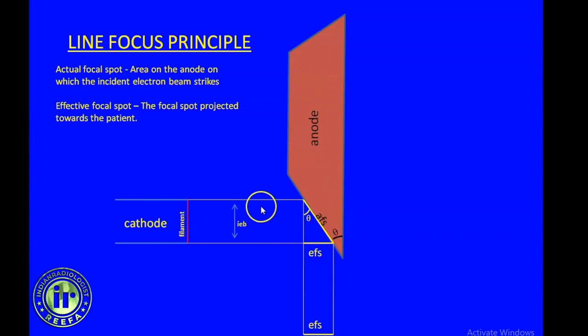The width of the beam should be longer so the surface area increases and there will be more heat dissipation. But if we have a wider beam, the image will be blurred. So we need a sharper image and higher heat dissipation. Both are contrary to each other. We need a trade-off between the two. That is achieved by the line focus principle.